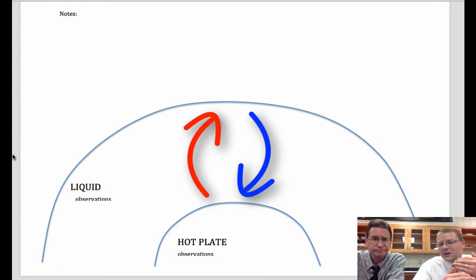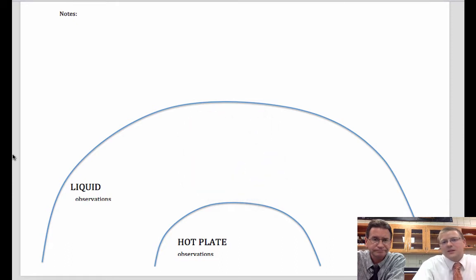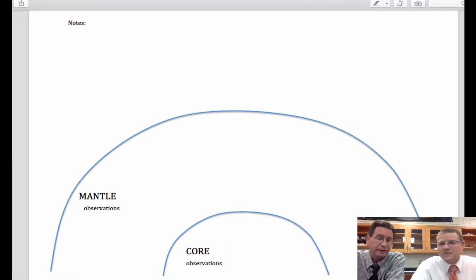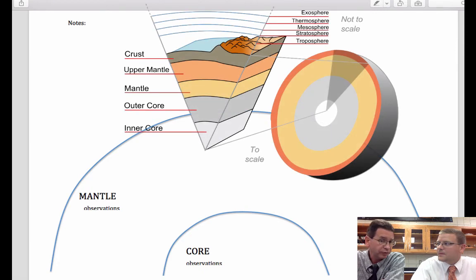So what we're going to do now is look at the notes that we've written about the hot plate and the liquid and apply them to the layers of the earth. If you do that, then you can imagine that the core is like the hot plate, the mantle is like the liquid that's above it. And then you can basically superimpose your ideas from one side of the paper to the other. So the core is hot, and the mantle is sort of liquid and it's hotter in some places than it is in others.